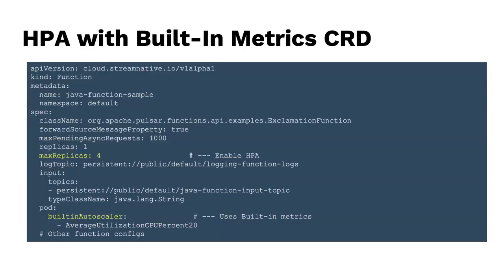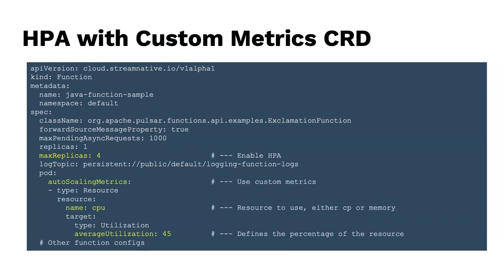In the Function Mesh CRD, to enable HPA you set up the replicas and on the pod specify the built-in autoscaler with the metric name. For example, set average CPU utilization to 20% — if the pods exceed 20% CPU, it will trigger and automatically scale from a minimum of 1 up to a maximum of 4. For a custom threshold, you use the autoscaling metrics section with a custom resource type, specifying either CPU or memory as the trigger resource.